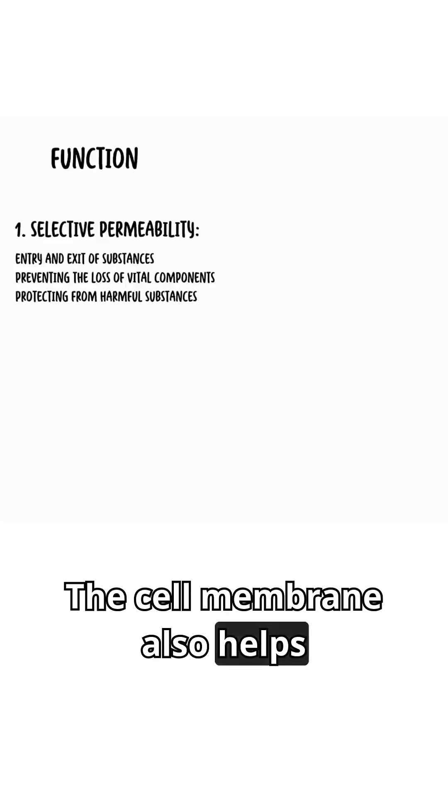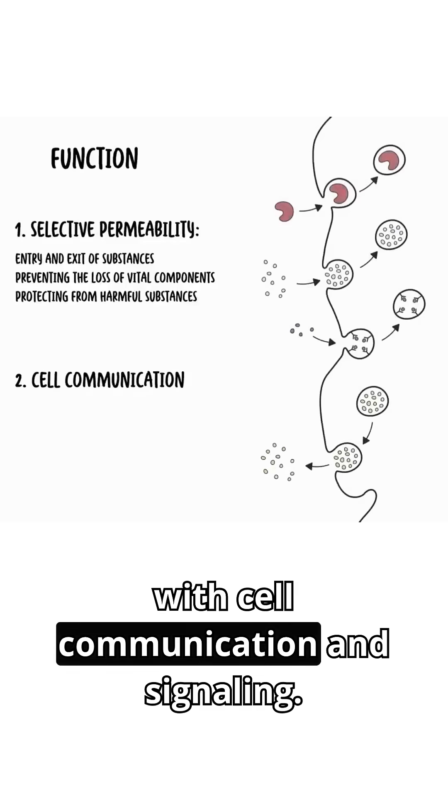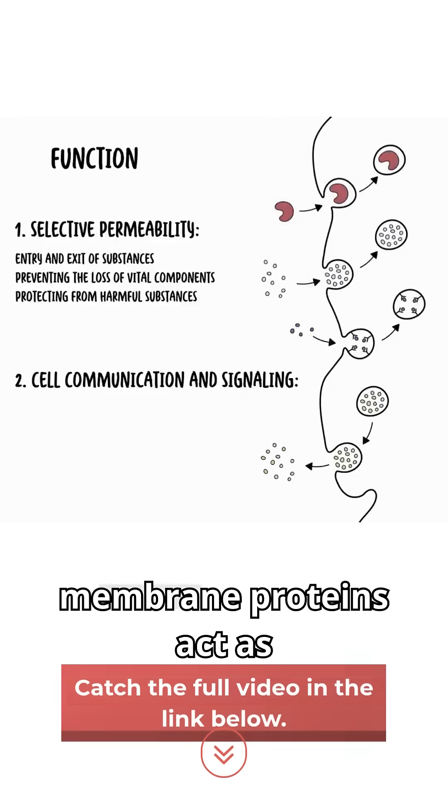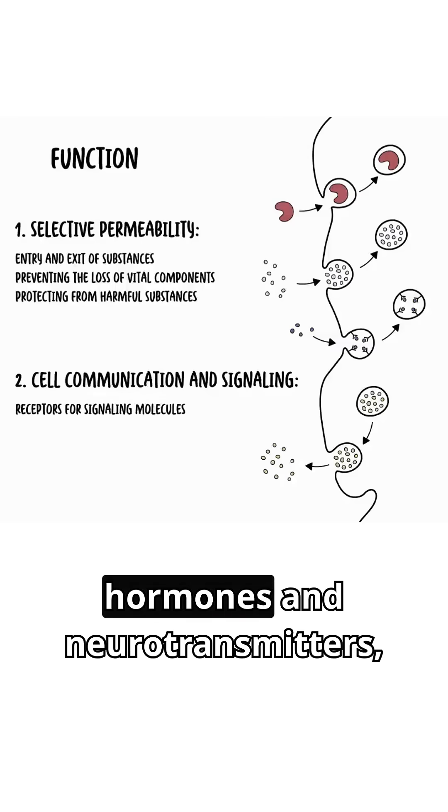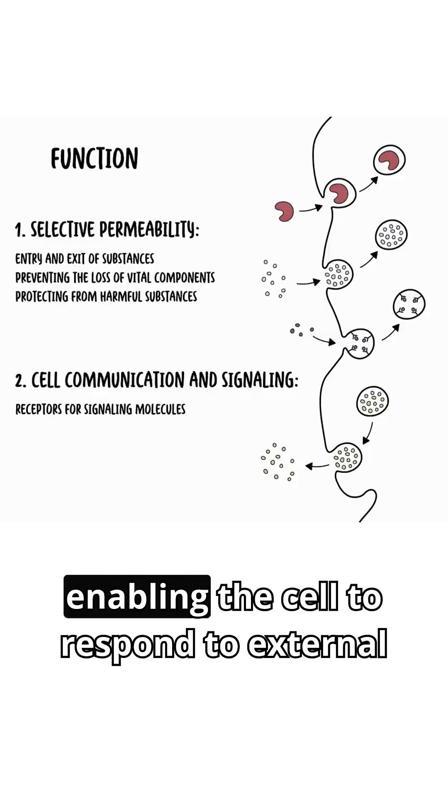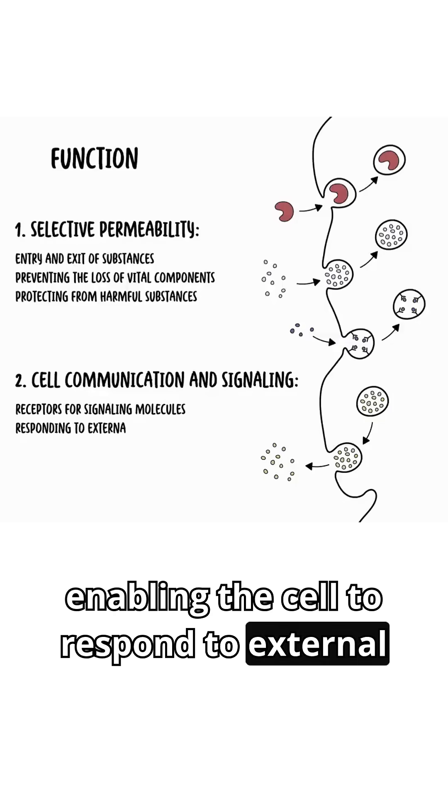The cell membrane also helps with cell communication and signaling. The membrane proteins act as receptors for signaling molecules such as hormones and neurotransmitters, enabling the cell to respond to external stimuli and communicate with other cells.